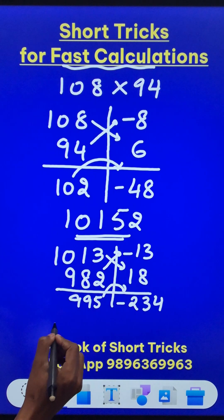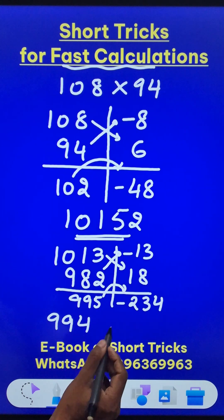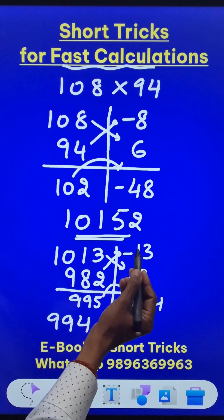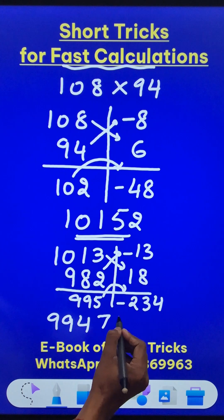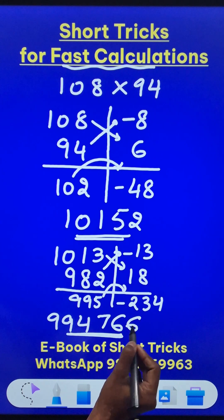Now borrow one from here. This becomes 994 and 1000. This time the base is 1000. So 1000 minus 234 gives us 766 which is the remaining part of your answer.